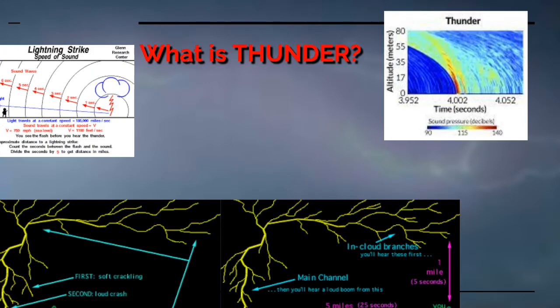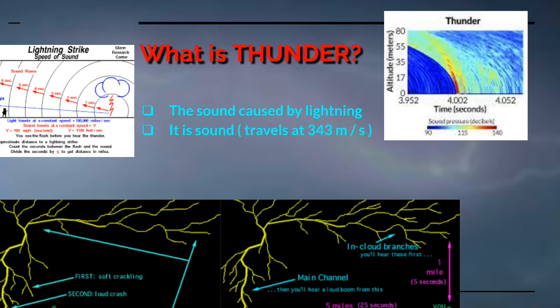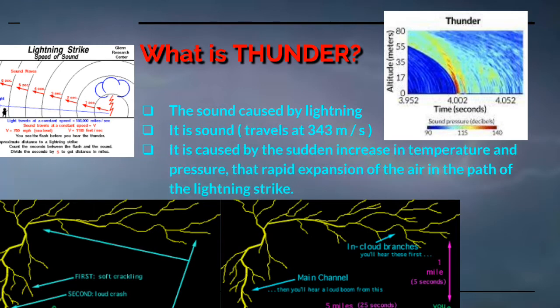What is thunder? Many of you people get confused between lightning and thunder, so I thought of including this in the video. Thunder is the sound caused by lightning, which means it is sound. Thunder is caused by the sudden increase in temperature and pressure — that rapid expansion of the air in the path of the lightning strike.